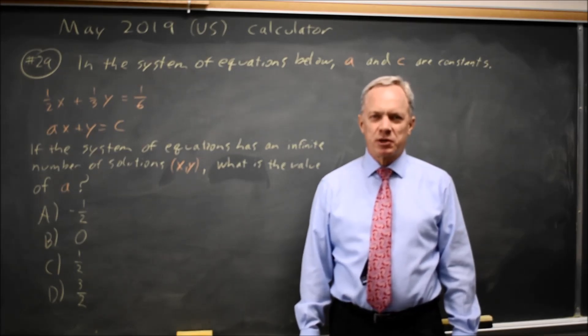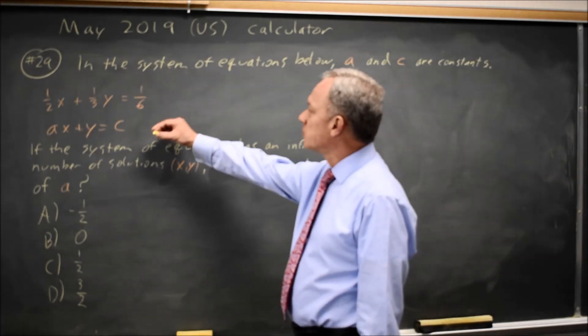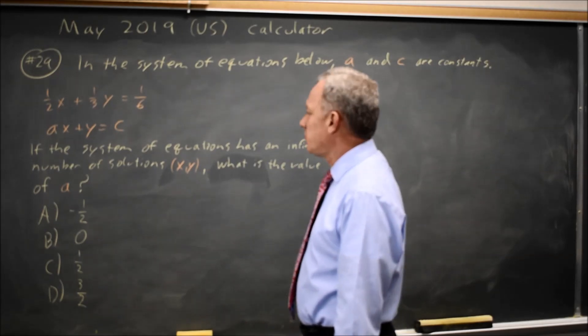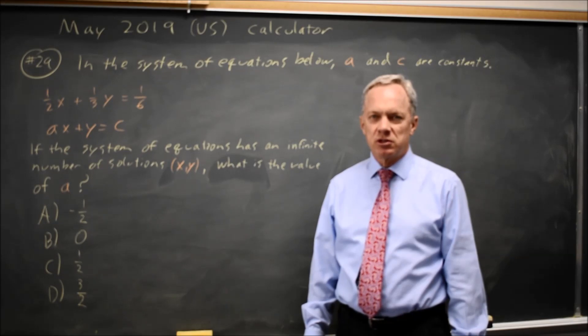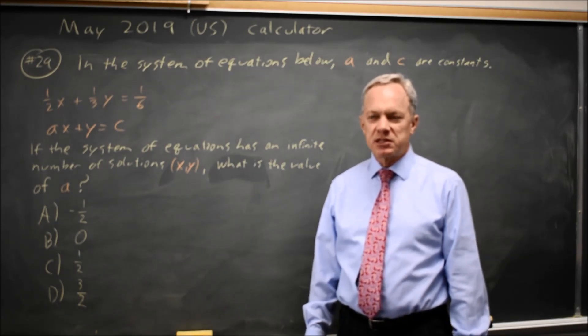This is calculator question number 29. College Board gives us a system of equations and says there are infinitely many solutions. If a system has infinitely many solutions or no solution, the slopes have to be the same.